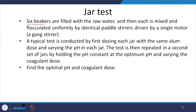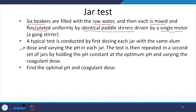Typically we have 6 beakers with the sample, then rapid mixing, then slow mixing for flocculation, using identical paddle stirrers driven by a single motor. In the first test, I either change pH or dose. Typically I will keep pH constant and vary the dose, though people go about it different ways. It is always better to keep pH constant and then look at the dose effect.